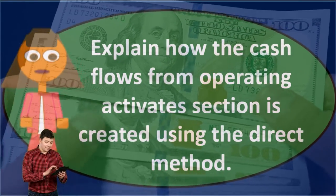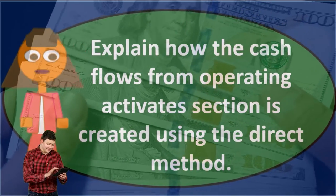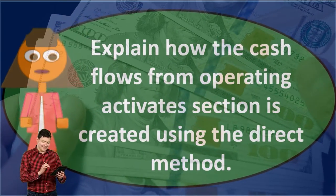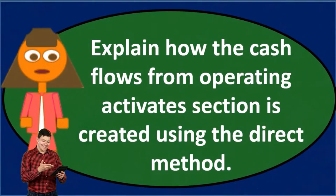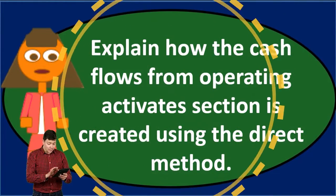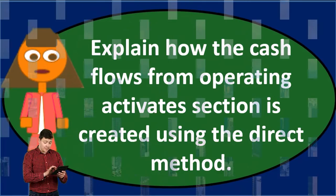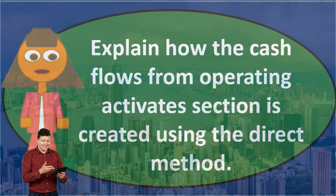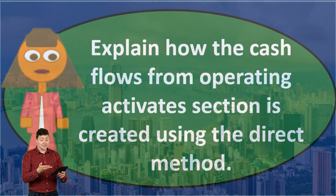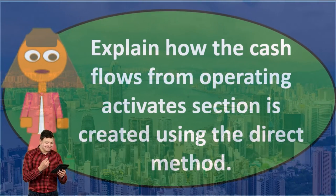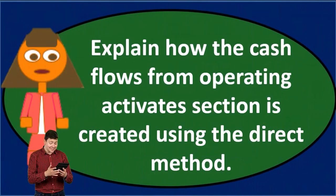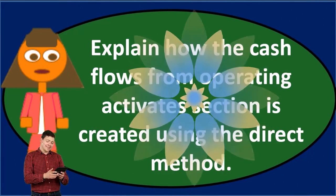We're essentially taking the income statement, which is driven by accrual principles — revenue recognition and matching — and converting it to basically an income statement driven by recognizing revenue and expenses when cash happens. We're recognizing cash flows based on these activities. That's what the direct method is. We can compare and contrast that to the indirect method for more detail.